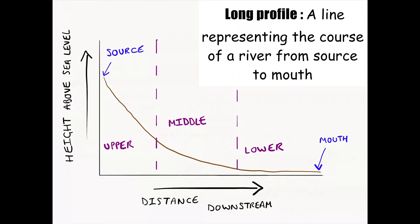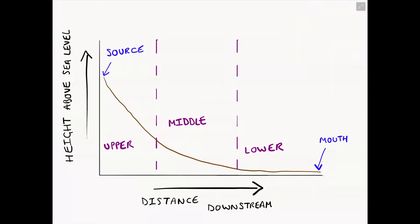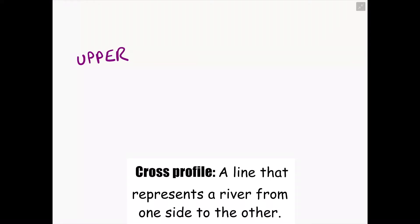This diagram is the overall theory of how a river from source to mouth changes in terms of height above sea level. Now let's not confuse the long profile with the cross profile. If I was to stand in the centre of a river channel and draw an imaginary line from one side of the river bank to the other side and slice across the river, that would give me a cross profile.